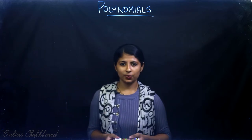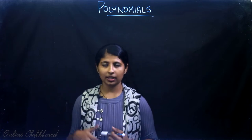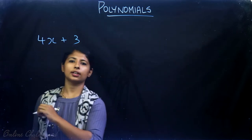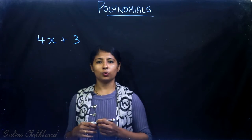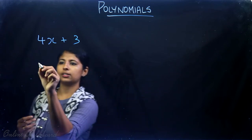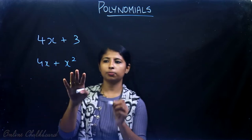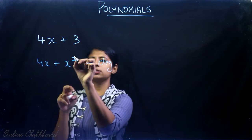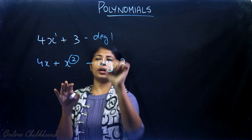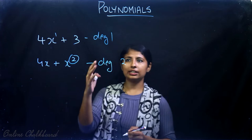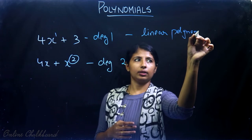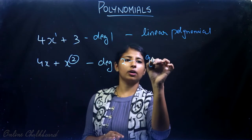In class 9 we learned about polynomials in one variable. For example, 4x + 3 is a polynomial with degree 1. The degree is the highest power of the variable. So for 4x + x², the degree is 2. Any polynomial with degree 1 is called a linear polynomial, and any polynomial with degree 2 is called a quadratic polynomial.